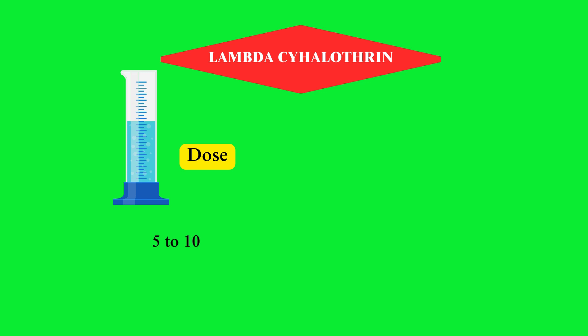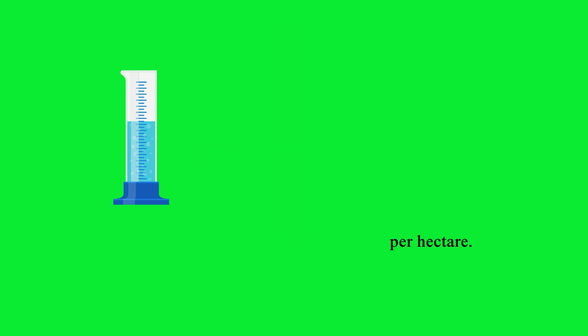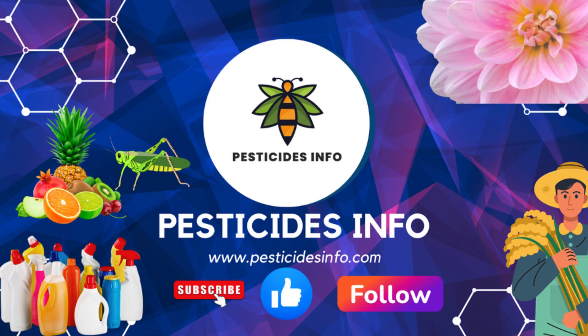Normal dose. The normal dose of Lambda-cyhalothrin varies depending on the target pest and crop. It is typically applied at concentrations ranging from 5 to 10 grams of active ingredient per hectare.